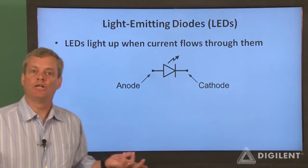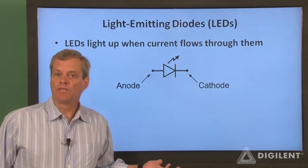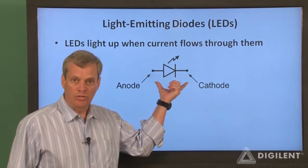One specific type of diode that we'll be using a lot in the near future is called a light emitting diode or LED. Basically, LEDs operate more or less the way other diodes do except that when current passes through them, they light up.